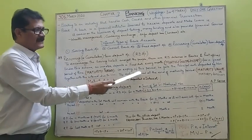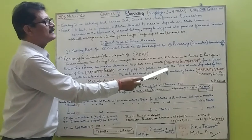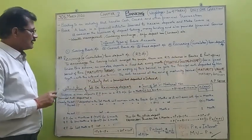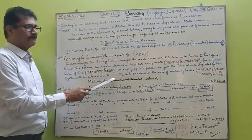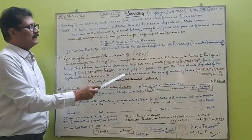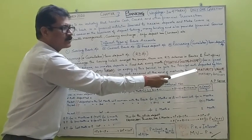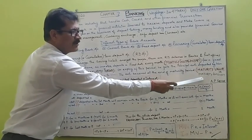On expiry of this period, he gets the principal amount deposited by him, together with the interest due to him. The amount received at the end of the maturity period is called maturity value or maturity amount.